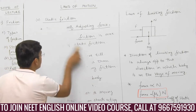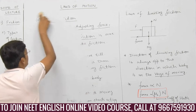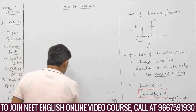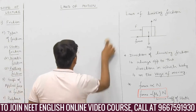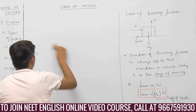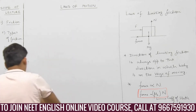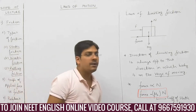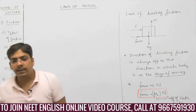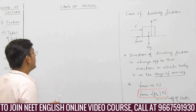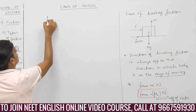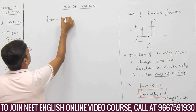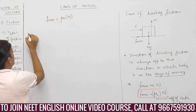Here I will clear a misconception: friction is not mu mg. Friction is mu multiplied by normal reaction — it is not mu mg.